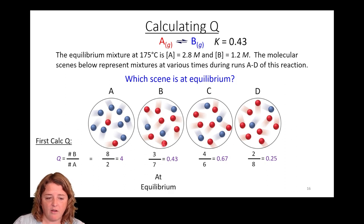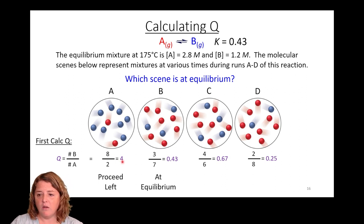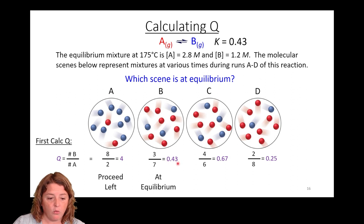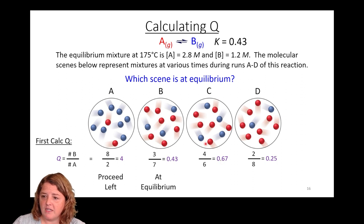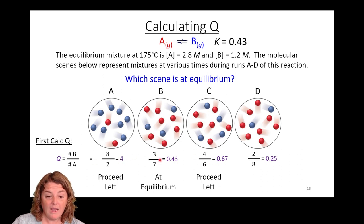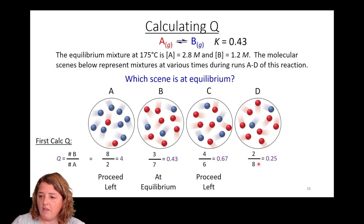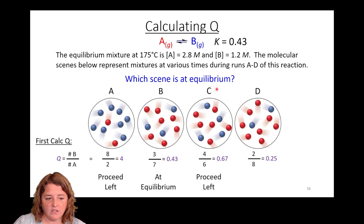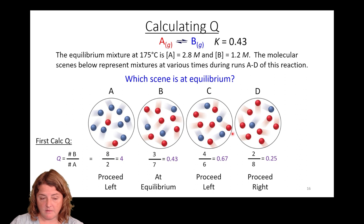So which scene is at equilibrium? Scene B. Scene A has Q equal to 4, which is too big, so it will proceed left. Scene C has Q equal to 0.67, also too big, so it proceeds left to make more A. Scene D has Q equal to 0.25, which is too small, so it will proceed to the right to make more B and deplete A until it reaches 0.43.